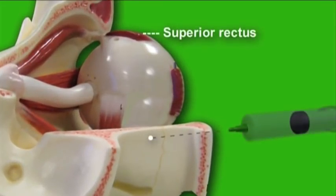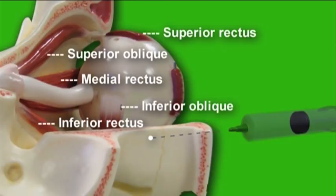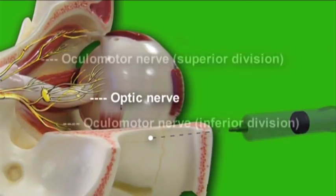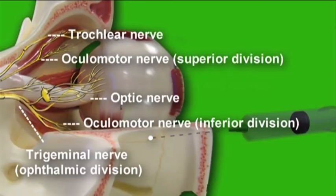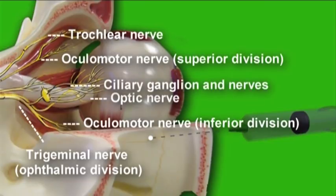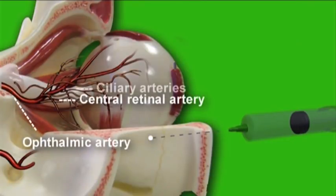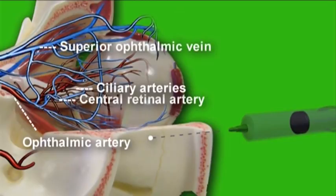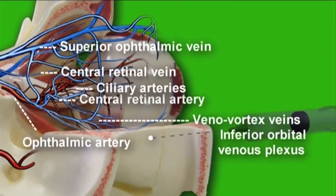The superior rectus, inferior rectus, medial rectus, and superior oblique muscles are medial to the needle tip. The inferior oblique muscle is now superior to the needle tip. The lateral rectus muscle remains lateral to the needle tip. The optic nerve, the superior and inferior branches of the oculomotor nerve, the trochlear nerve, the trigeminal nerve, the ciliary ganglion, and the ciliary nerves are medial to the needle tip. The ophthalmic artery, central retinal artery, ciliary arteries, superior ophthalmic vein, central retinal vein, and the veno-vortex veins are medial to the needle tip.